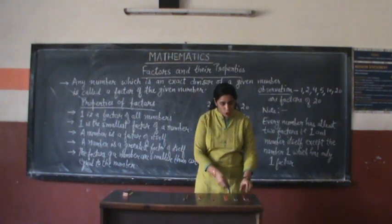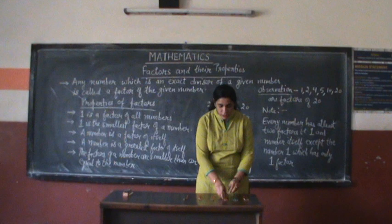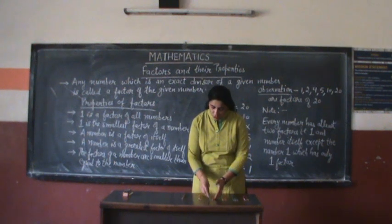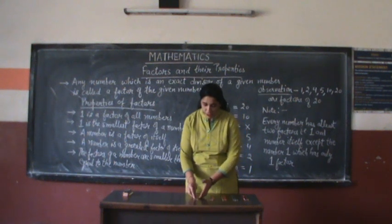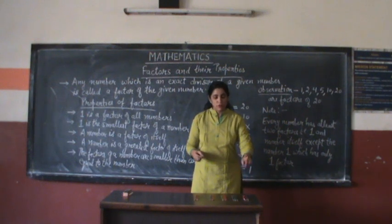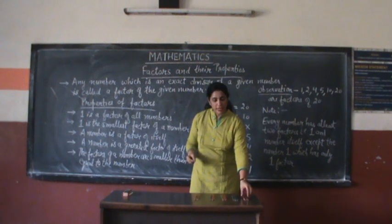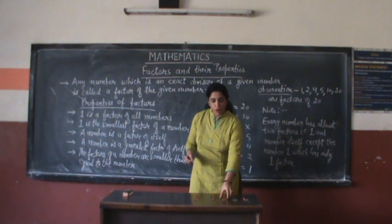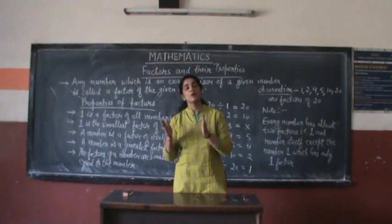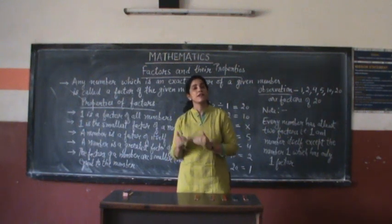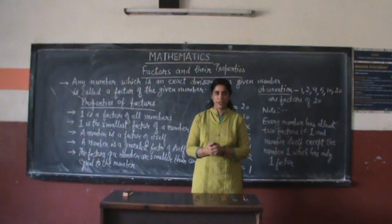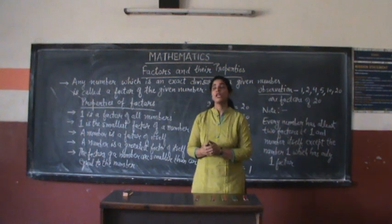If I give four pencils to each child, I observe that five students can be given the pencils. So five students can be given four pencils each, which means four and five are both divisors of 20 and they are factors of 20.